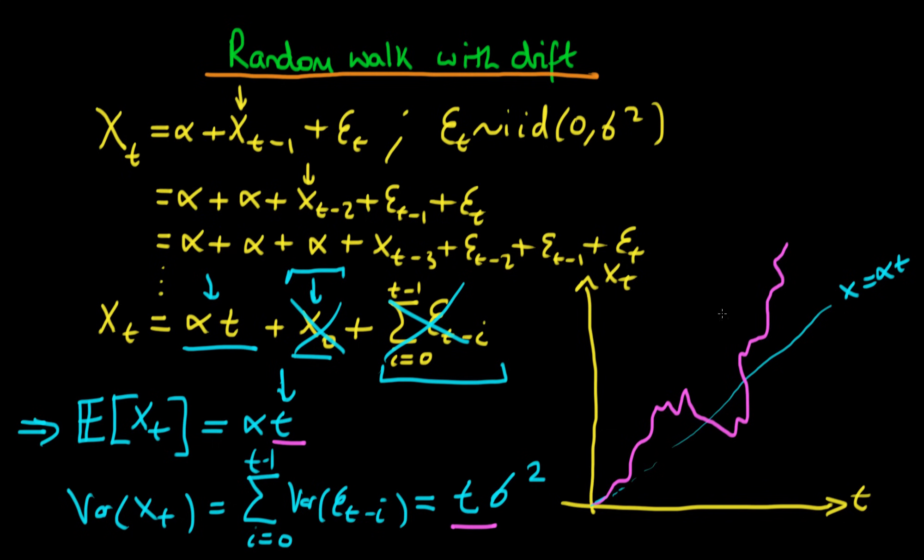I notice that the meaning behind drift becomes quite apparent once I graph it essentially this alpha term here determines the fact that this series tends to drift upwards it doesn't stay around zero like the other sorts of random walk did or it didn't even cross zero like the other random walks did rather